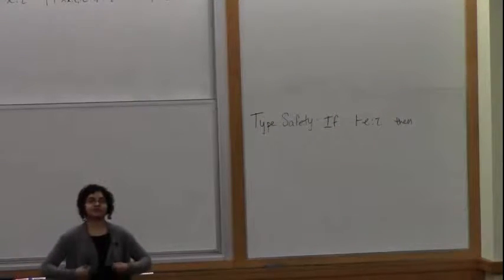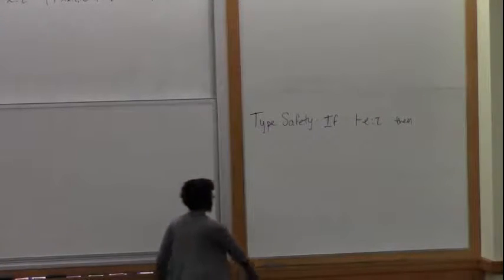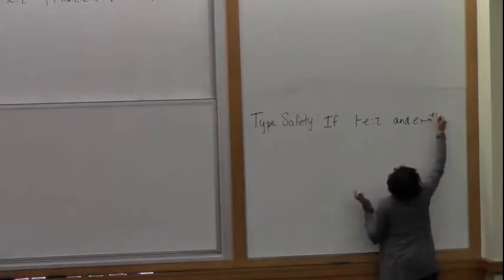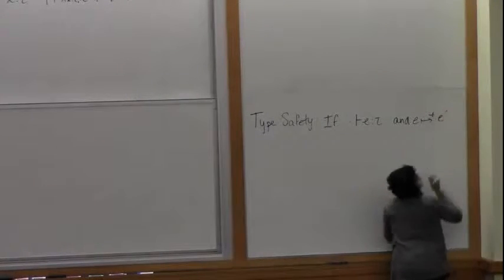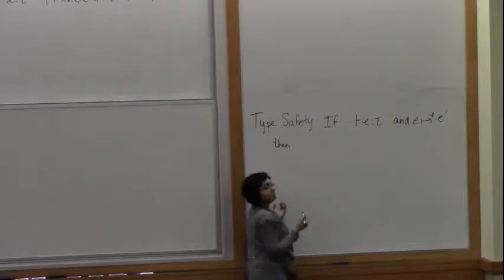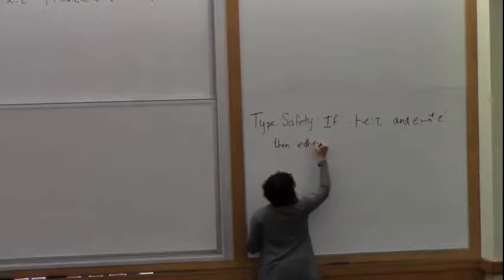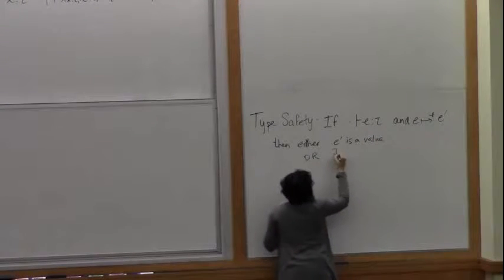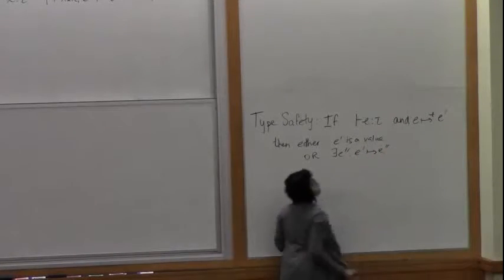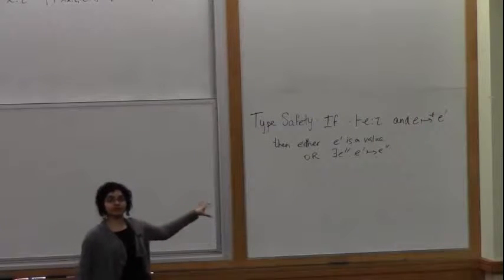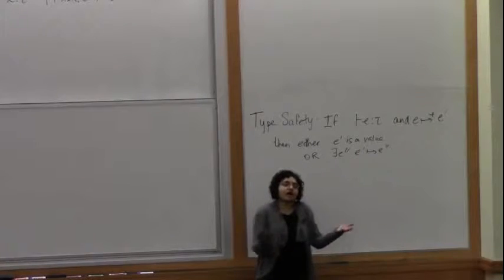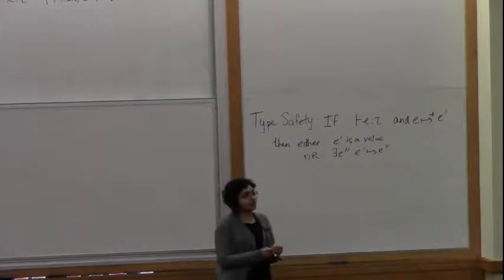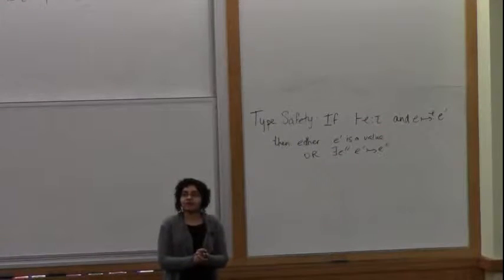It's a very syntactic, operational sort of method of proving what we actually want. What we actually want is: if a program is well-typed and it takes some number of steps — zero or more — to some E prime, then either E prime is a value, or there exists another E double prime such that E prime can step to E double prime. That is what we mean by well-typed programs do not get stuck.